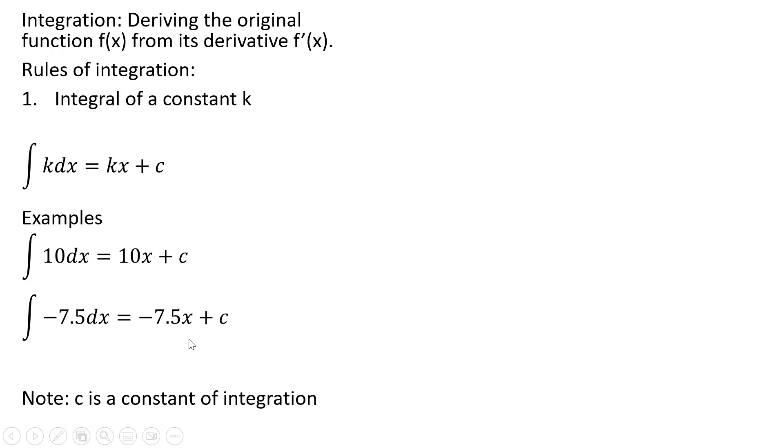You'll notice here, one way we can check our answer: if we take the derivative of our integral answer, we would get back the original integrand. So the derivative of minus 7.5x plus c, c is a constant so that becomes zero, and the derivative of minus 7.5x is just minus 7.5, which we have here in the integrand.